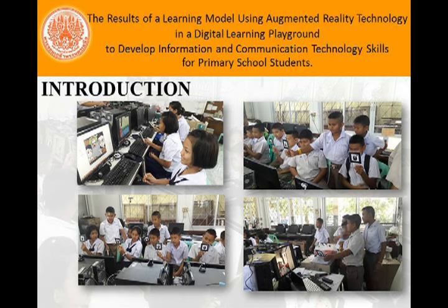Introduction: According to Strategy 1 of Thailand's Information and Communication Technology Master Plan No. 2 (2552–2556 Buddhist Era), it aims to develop manpower for the field of ICT as well as for the general public to be capable of creating, producing, and using information with consideration and wise adjustment.